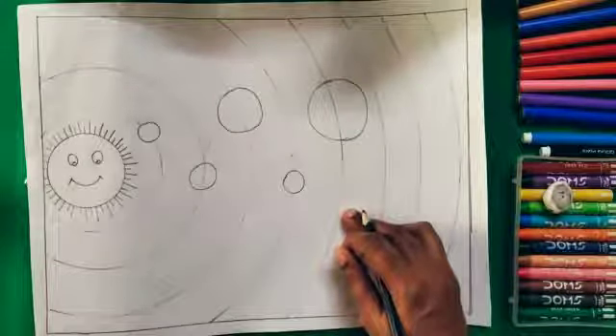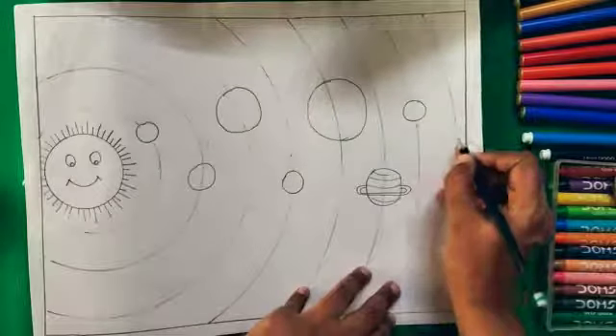Now children, which planet has beautiful rings around it? Yes, it's Saturn. So first we are going to draw a circle and draw rings for it. Now we are going to draw Uranus. Now the last and the coldest planet is Neptune.